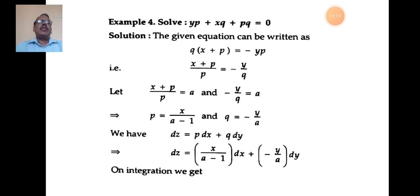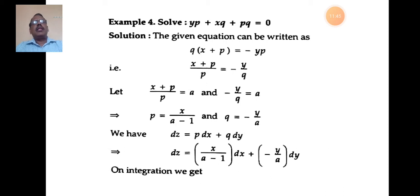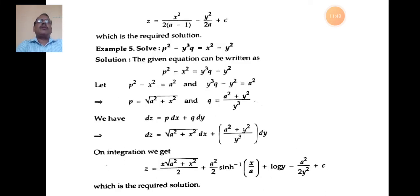Substituting in dz = p dx + q dy: dz = x/(a-1) dx + (-y/a) dy. On integrating: z = x²/[2(a-1)] - y²/(2a) + c. This is the required solution of the given differential equation.